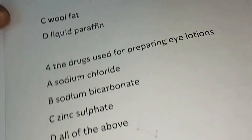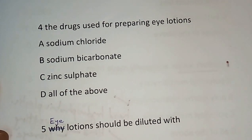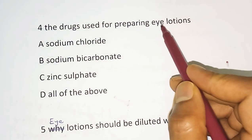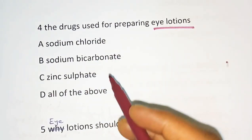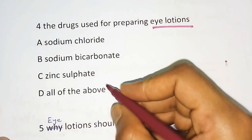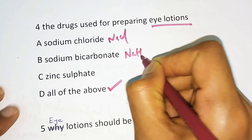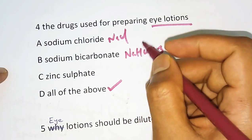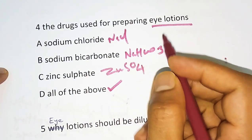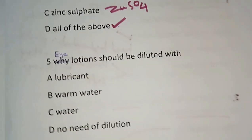Moving to the next question. The drugs used for preparing eye lotions — options are: sodium chloride, sodium bicarbonate, zinc sulfate, or all of the above. The correct answer is all of the above. We can use sodium chloride, sodium bicarbonate, and zinc sulfate for the preparation of eye lotions.